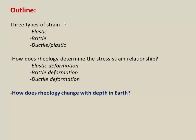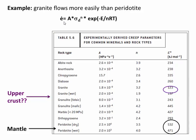Now let's wind down the video by bringing things back to how rheology controls deformation within Earth. The lithosphere is made up of a variety of different rock types that will all have different rheologies. This is most apparent for ductile deformation, where strain rate is controlled by material-specific parameters A, N, and E. For example, granite in the upper crust has a much lower activation energy than peridotite in the lithospheric mantle, which has a five times higher activation energy. This means granite will start to flow ductally at a much lower temperature than peridotite.